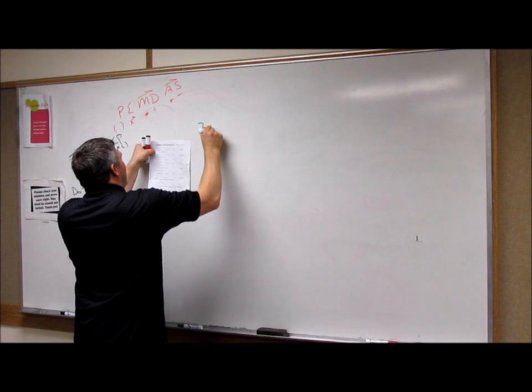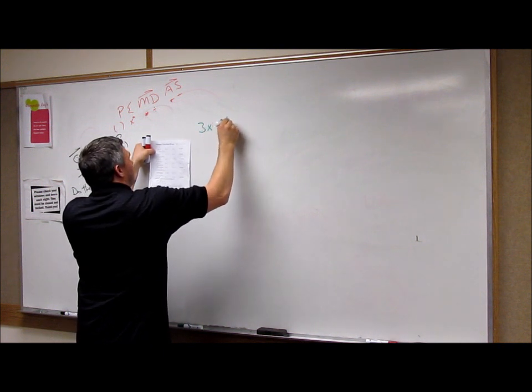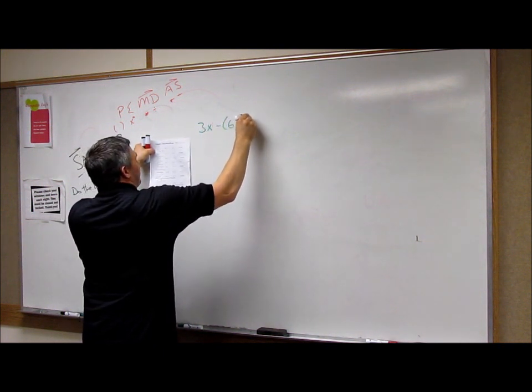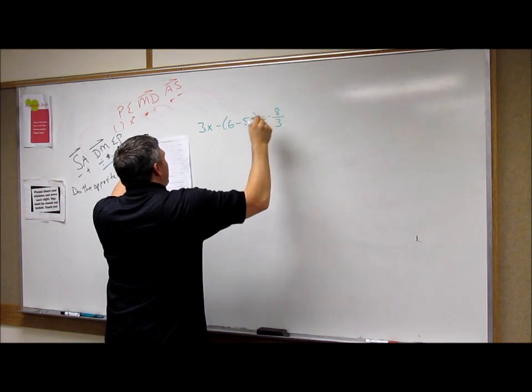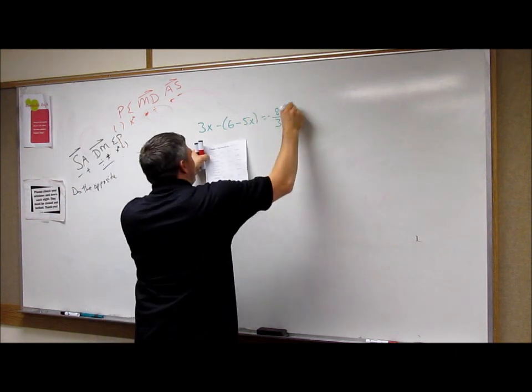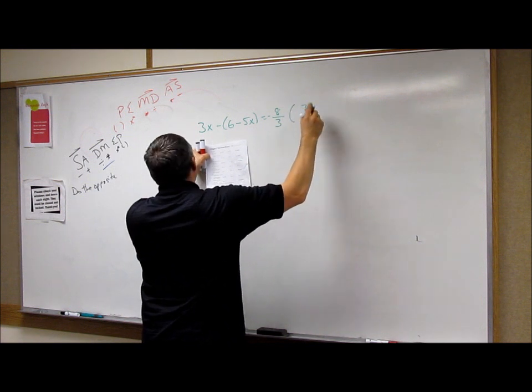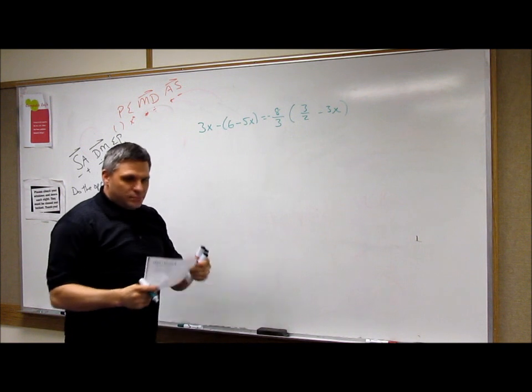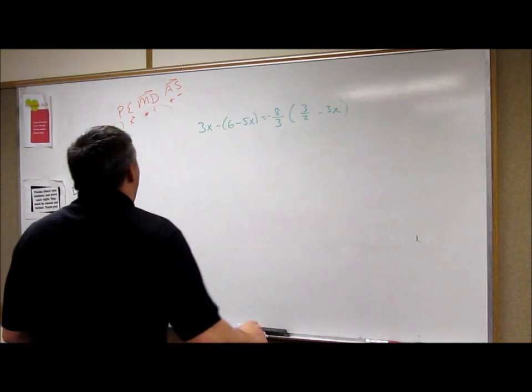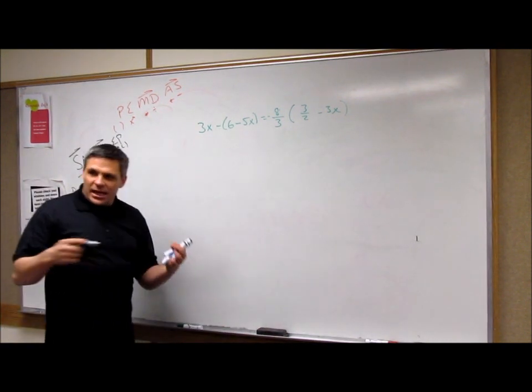So, 3x minus 6 minus 5x equals 8 over 3 negative, right? Yes. Times 3 over 2 minus 3x. Alright, first things first. I want to deal with them.